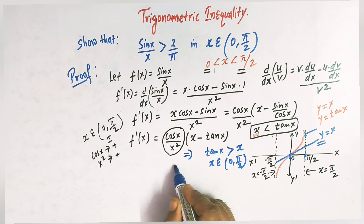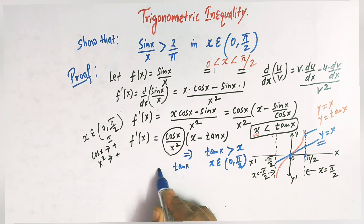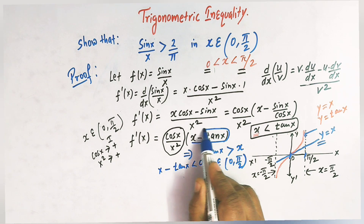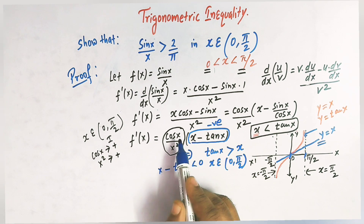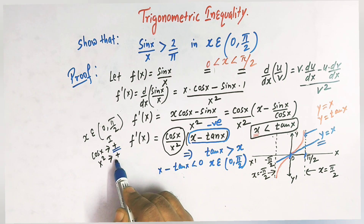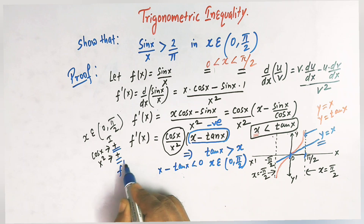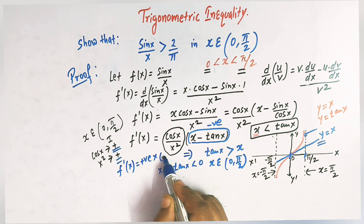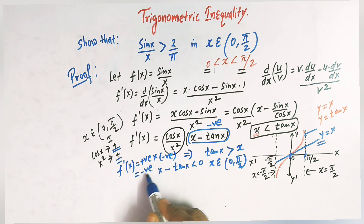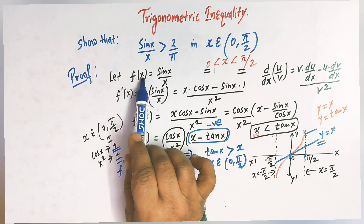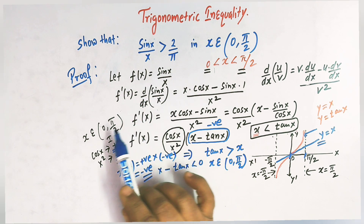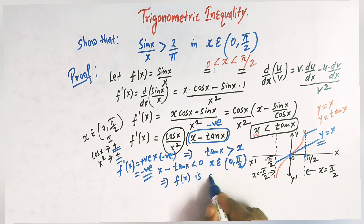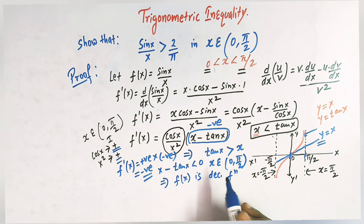So since tan x is greater than x, it implies that x minus tan x is always less than 0 — it is a negative quantity. And cos x over x square is always a positive quantity. So the sign of f prime of x is positive multiplied by negative, which is negative. Therefore the derivative of f of x is always negative in the interval 0 to pi by 2, which means f of x is always a decreasing function in the interval 0 to pi by 2.